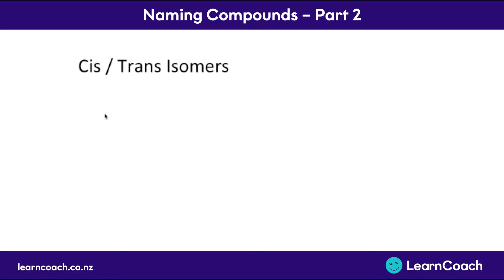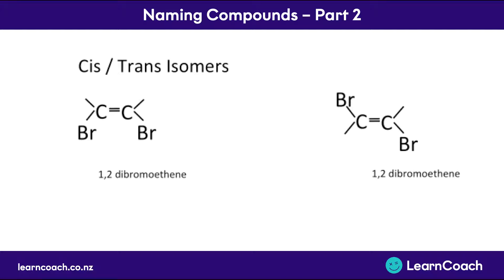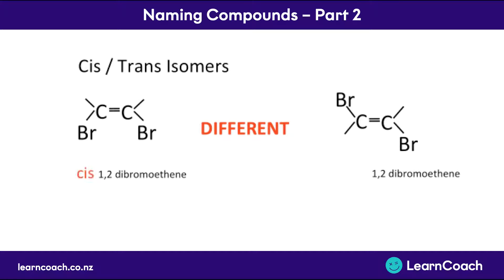But what happens when we get to a double bond is very different. This double bond can't spin freely. And therefore, if we have two bromines on the bottom, it's different from having a bromine on the top and another on the bottom. So we can no longer just call them both 1,2-dibromoethene. We have to have a way to distinguish between them. And the way that we do it is we add 'cis' for ones that are on the same side of the double bond.